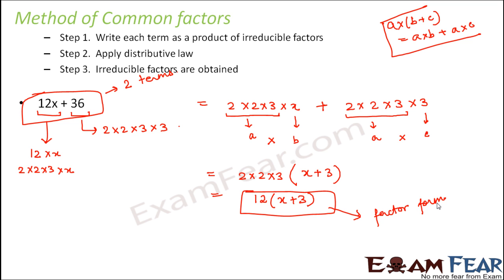Step 3 is irreducible factors are obtained. Now let us try out a few more examples of the method of common factor. Here you are given 22y minus 33z. Our step number one is to factorize both the terms.